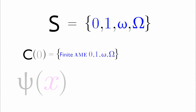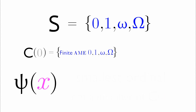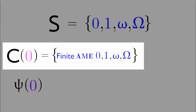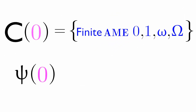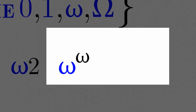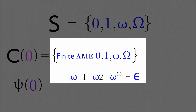We have PsiX, defined as the smallest ordinal which is not a member of CX. Because we have C0, we have Psi0. Let's see which ordinal is not a member of C0. We have 1, and we can perform addition to it a finite number of times. But we also have omega — we can add, multiply, and even exponentiate omega, but only a finite number of times. If we exponentiate omega to itself an infinite number of times, we get epsilon naught. So epsilon naught is our first ordinal not constructible with C0, making it our Psi0.